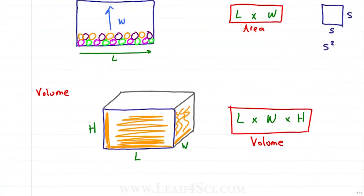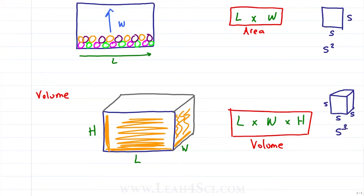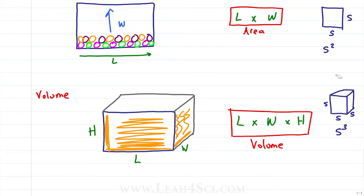I hope you can see the pattern for volume, because if I take a square and turn it into a cube — which is a three-dimensional square — the equation should be length times width times height, so S times S times S is S cubed. And hey, isn't this thing called a cube? S cubed is the volume of a cube.